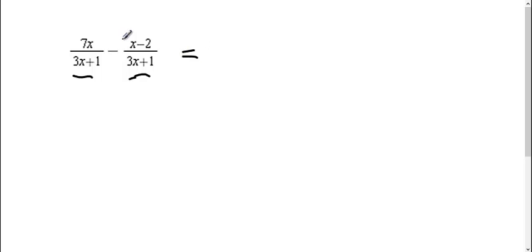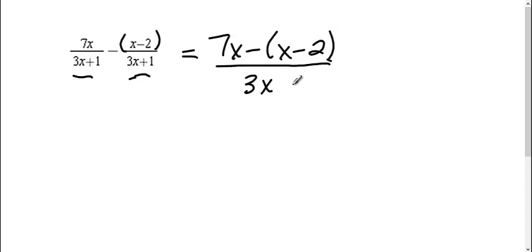Now with subtraction it's a little bit different, especially when we have two terms here. We put parentheses around here. So when I combine this, I get 7x minus (x minus 2) all over my common denominator of 3x plus 1.